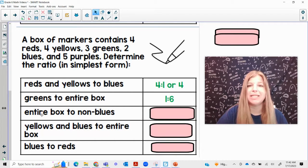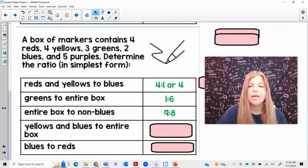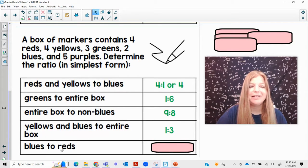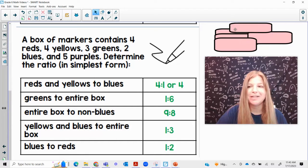The entire box, which we know is now 18, to non-blues. All right, so if there's two blues, then that means the non-blues would be 16. So the entire box, 18, to the non-blues, 16. 18 to 16, divide them both by two, and you get nine to eight. Yellows and blues. So yellows and blues. So four plus two is six to the entire box of 18. Six to 18 would simplify to one-third. And the last one, blues to reds. We have two blues to four reds. Two to four simplifies to one-half.